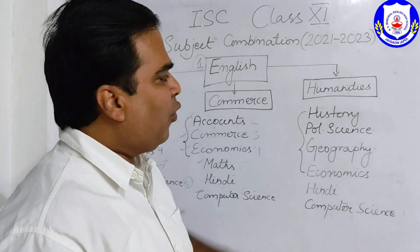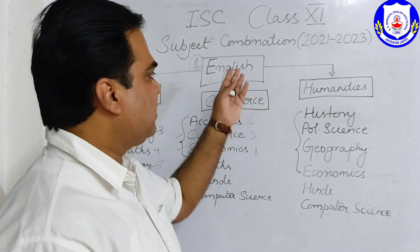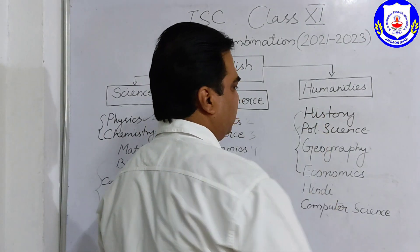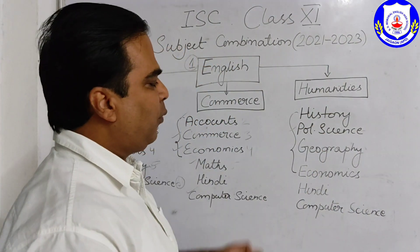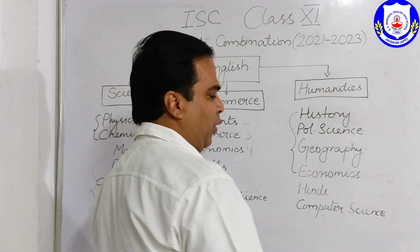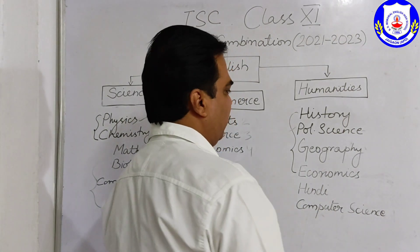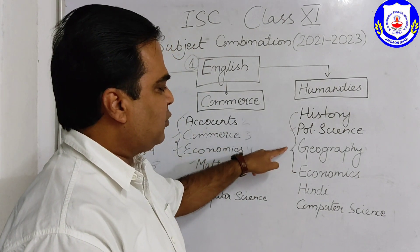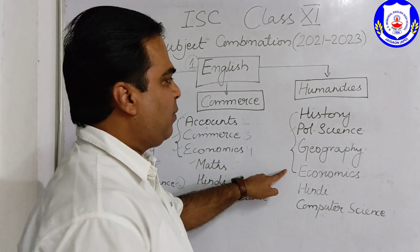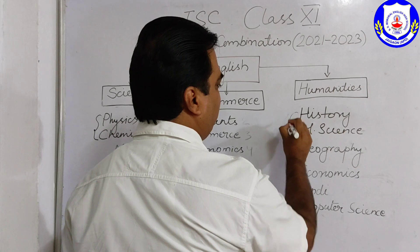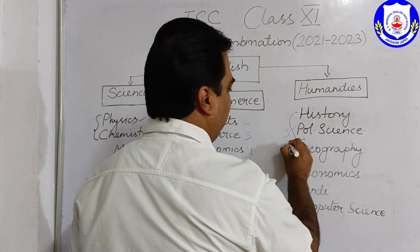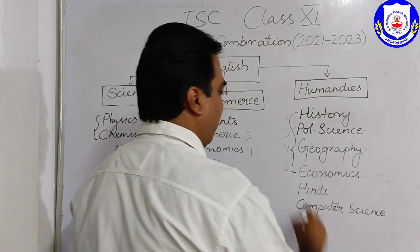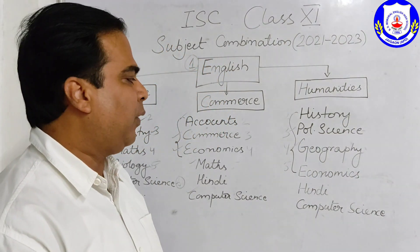Now focusing on Humanities: English is compulsory. History and Political Science are important subjects in this stream. Geography is also very important if you are going for Humanities. Economics is also included. So altogether, History, Political Science, Geography, and Economics give you five subjects including English.